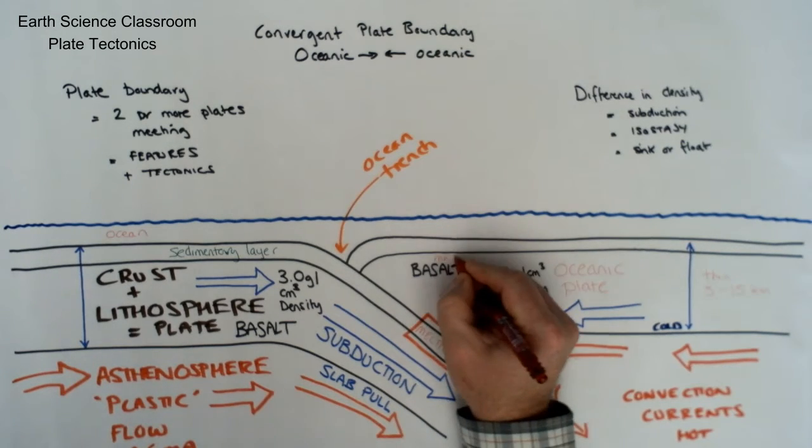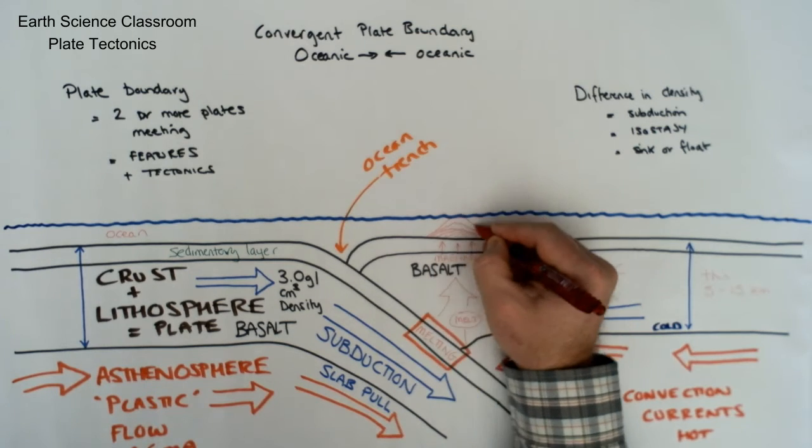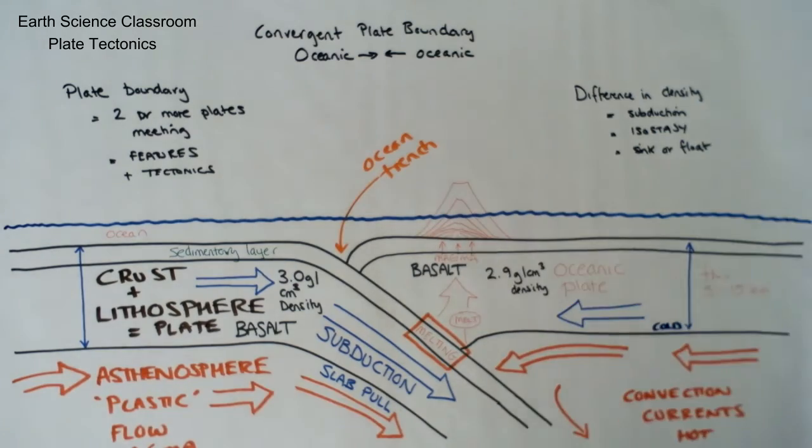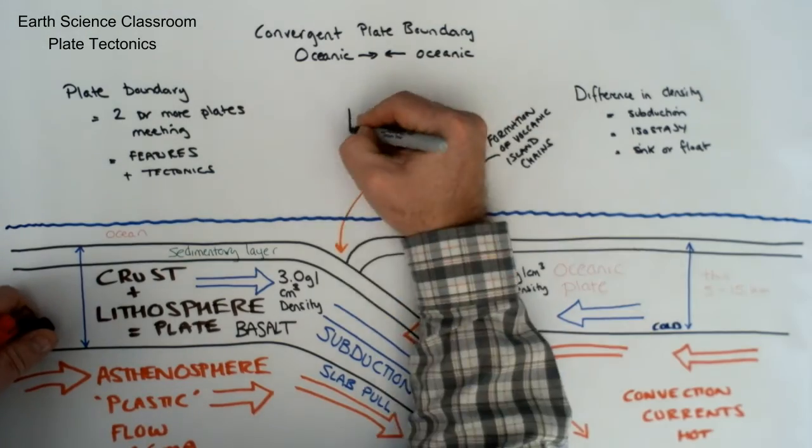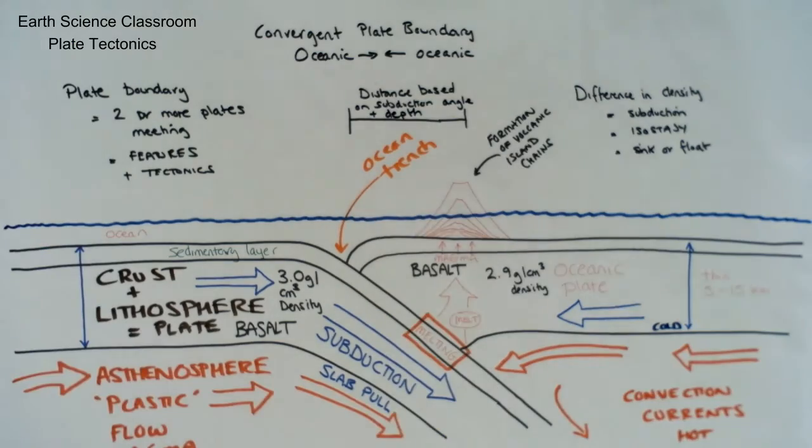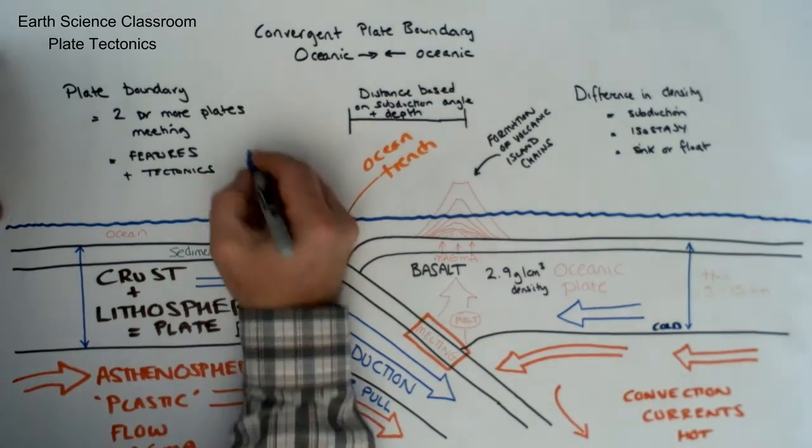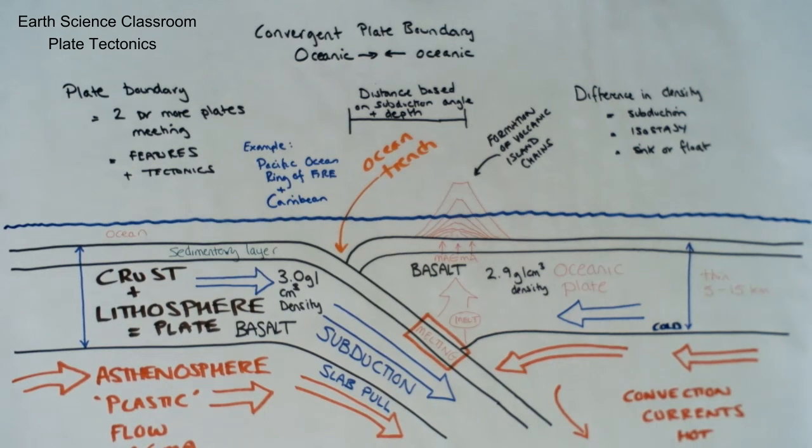This subduction causes melting and decompression melting of basaltic magma to rise up through the lighter plates and create volcanoes on the ocean floor, eventually creating islands, volcanic islands, and creating a chain of islands along parallel to this boundary. It also creates an ocean trench, the deeper part of the ocean where the subduction occurs. You can actually see the distance of the volcanoes from the trench and it's consistent and parallel along the entire chain of volcanoes and along this convergent plate boundary. An example would be the Caribbean or the Pacific Ocean islands around the western Pacific.